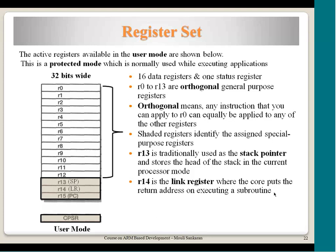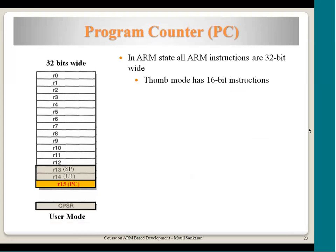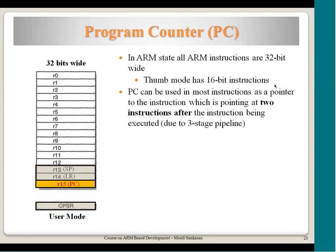R15 is the program counter, always pointing at the next instruction to be fetched from memory. The CPSR is the current program status register. Since all ARM instructions in ARM state are 32-bit, the PC always points to a set of 4 bytes. In ARM state, 32-bit instructions are accessed. In Thumb mode, instructions are 16-bit. All ARM state instructions must be 4-byte aligned — the processor always reads instructions as 4-byte data.